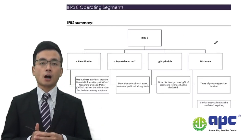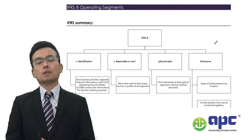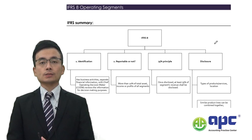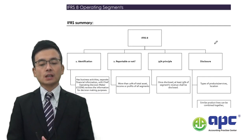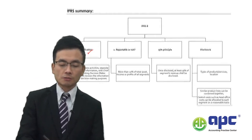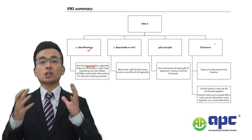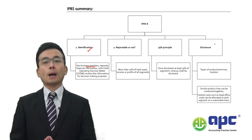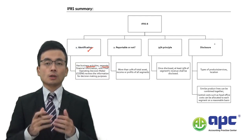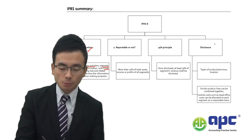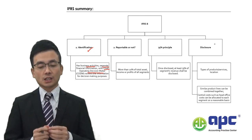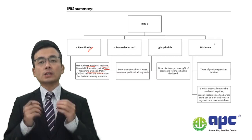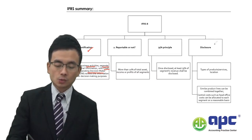Another IFRS to recap on is IFRS 8 Operating Segments. It applies only to public listed companies that have different product lines or geographical areas, requiring them to disclose segments separately. A business needs to identify its segments — different business activities — and there will be a chief operating decision maker to review that information. For each segment, separate financial information is prepared, and if these conditions are met, you have a reportable segment.